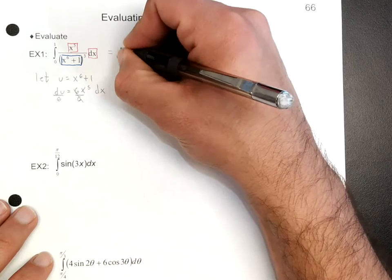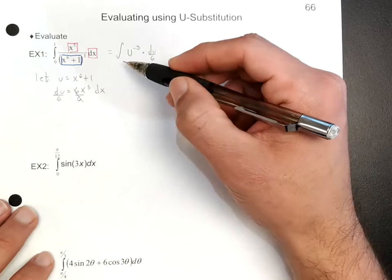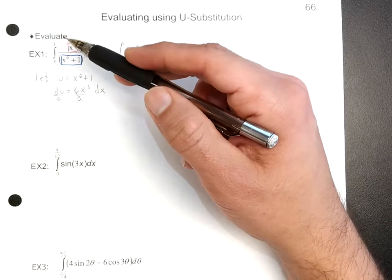I'm going to write this as u to the negative 3 power times du over 6. Now before you write the two boundary values — the lower boundary and the upper boundary — because you used substitution, you're going to have to replace them.